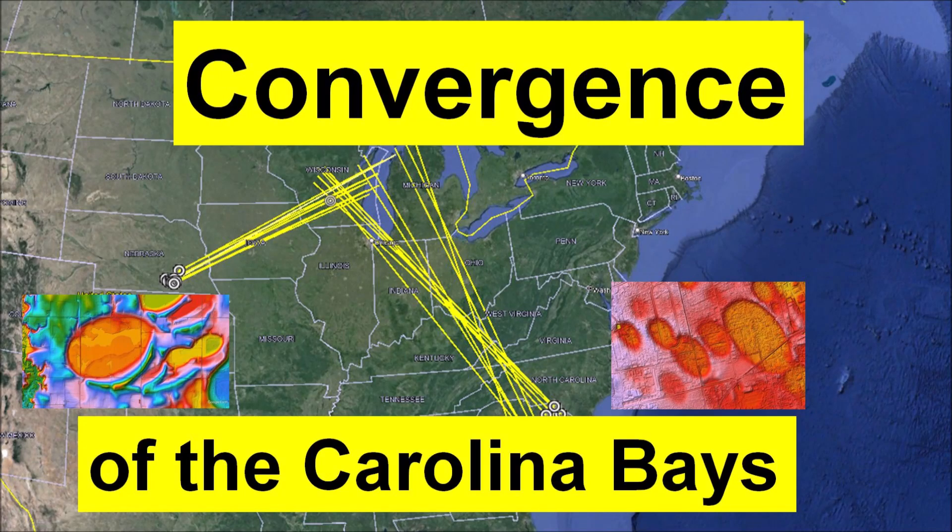Welcome to another presentation about the origin of the Carolina Bays. The extensions of the major axis of the Carolina Bays and Nebraska Rainwater Basins converge by the Great Lakes. This presentation examines some of the problems of fitting ellipses to the basins and the counter-intuitive features of Great Circle trajectories.